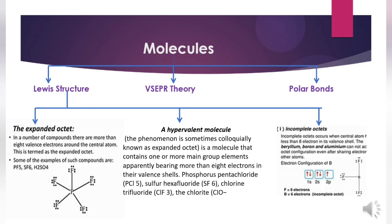A hypervalent molecule is one that contains one or more main-group elements apparently bearing more than eight electrons in their valence shell. Examples include phosphorus pentachloride, sulfur hexafluoride, and chlorine trifluoride. Incomplete octets occur when the central atom has fewer than eight electrons in the valence shell. Beryllium, boron, and aluminum cannot attain an octet configuration even after sharing electrons from other atoms.